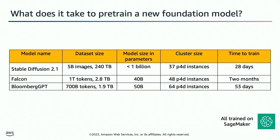Stable Diffusion 2.1 was trained on 5 billion images — that's a massive dataset — and when you unzip that it turns out to be 240 terabytes, basically crawled from the internet via the LAION dataset. Interestingly, the model size of Stable Diffusion is quite small; it actually fits on a single accelerator, less than 1 billion parameters in the neural network — the self-attention and multi-head attention blocks constituting the encoders and decoders.